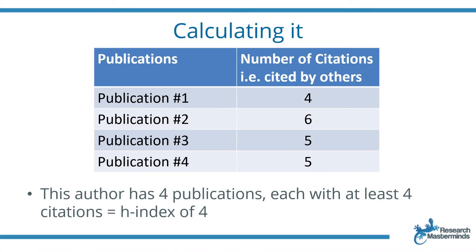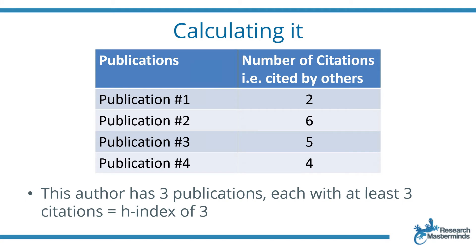In this case we have an author with four publications, and each of these publications has got a few citations — the first one has four, the second one six, then five and five. This means that this author has four publications each with at least four citations, which gives this author an H-index of four.